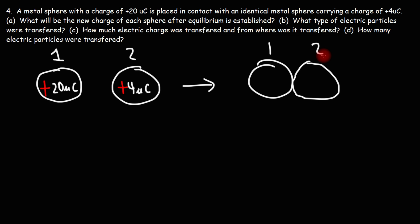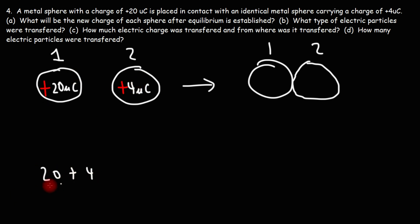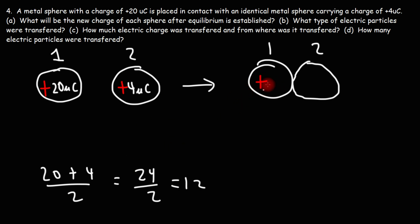To calculate the new equilibrium charge, we simply average the two values. Adding 20 and 4 gives us 24, divided by 2 equals 12. So charge 1 is going to be 12 microcoulombs, and metal sphere 2 will also be 12 microcoulombs.